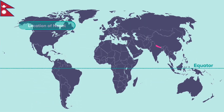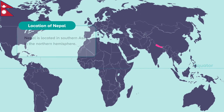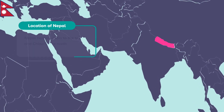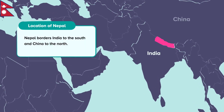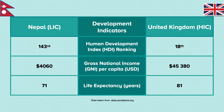The location of Nepal. Nepal is located in southern Asia, in the northern hemisphere. Nepal borders India to the south and China to the north. The development indicators are the evidence we use to determine whether a country will be considered a Higher Income Country, an HIC, or a Lower Income Country, an LIC.